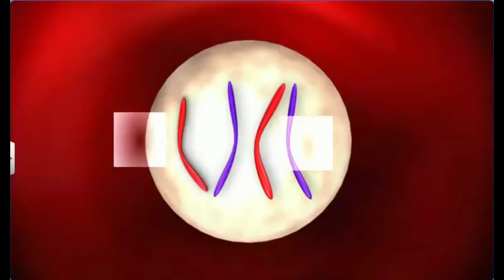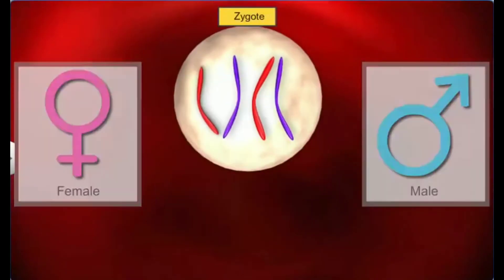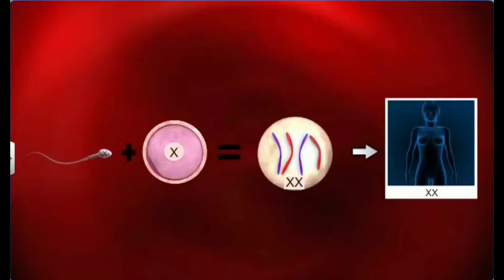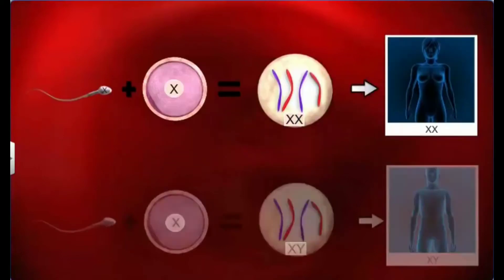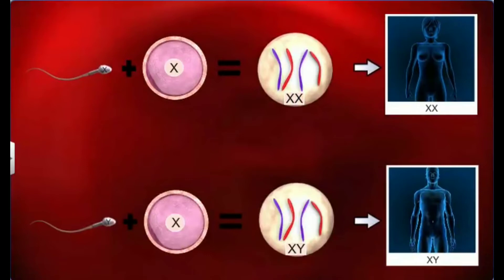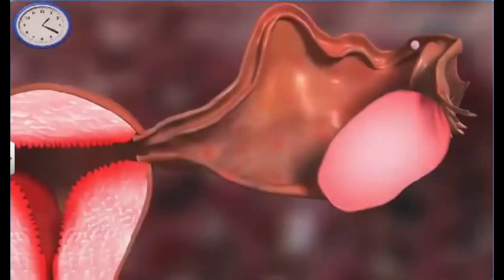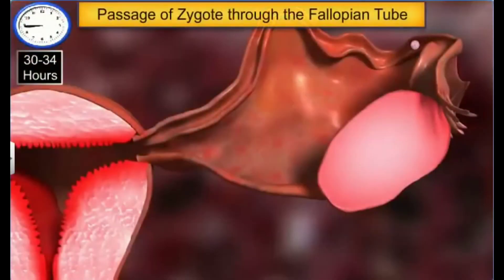The nucleus of the sperm and ovum fuse together to form a diploid zygote. Did you know that the sex of the zygote is decided at the time of fertilization? If the ovum is fertilized by a sperm containing the X chromosome, the resulting zygote contains XX chromosomes and could develop into a female. However, if a sperm containing the Y chromosome fertilizes the ovum, the resultant XY zygote develops into a male. Thus, it is the sperm that decides the sex of the fetus, not the ovum.